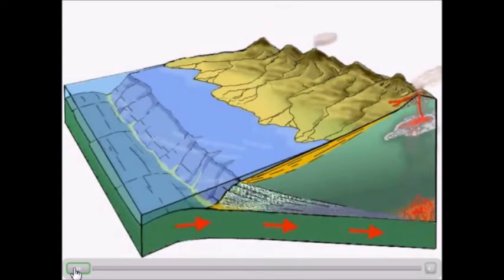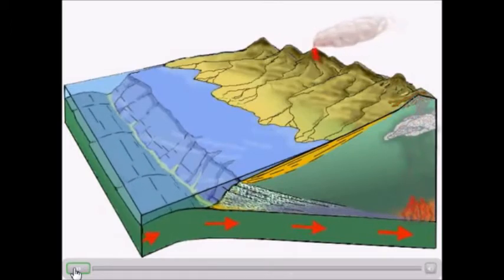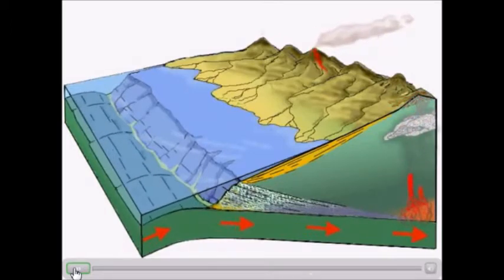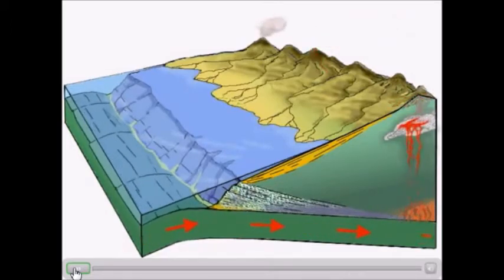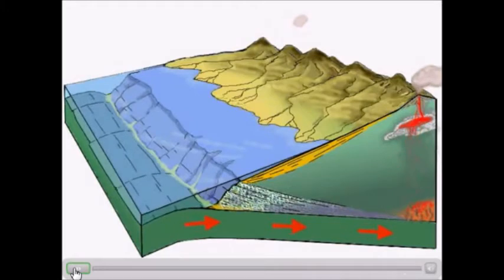Water combined with debris and all that material getting forced underneath the denser, heavier plate eventually pokes down into the asthenosphere where it gets cooked and heated up. Eventually that magma wants to be released. That magma, water, and all that material is critical to understanding what forms and creates the magma, which then creates these island arcs further inland.